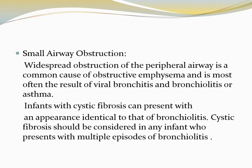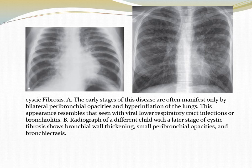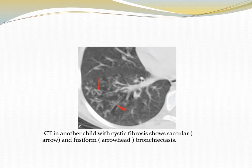Small airway obstruction causing widespread obstruction of the peripheral airway is a common cause of obstructive emphysema, most often the result of viral bronchitis and bronchiolitis or asthma. Infants with cystic fibrosis can present with an appearance identical to that of bronchiolitis. Cystic fibrosis should be considered in any infant who presents with multiple episodes of bronchiolitis. In this case of cystic fibrosis, there are bilateral peribronchial opacities and hyperinflation of the lungs. In a later stage, CT shows thickening of the bronchi, small peribronchial opacities, and bronchiectatic changes — saccular and fusiform bronchiectatic changes on axial sections.